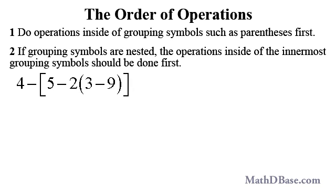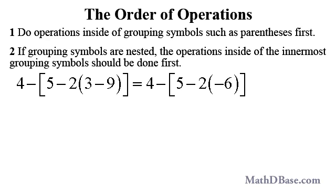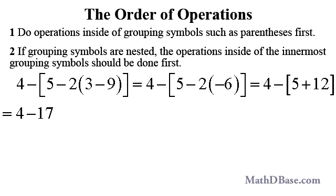If we want to evaluate the single-layer nested expression that we saw earlier, first we simplify 3 minus 9 to get negative 6, multiply negative 2 by negative 6 to get positive 12, then we add the 5 and 12 to get 17. But since there is a negative sign outside of the square bracket, it is actually negative 17.